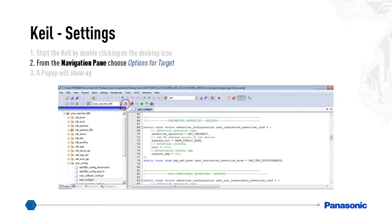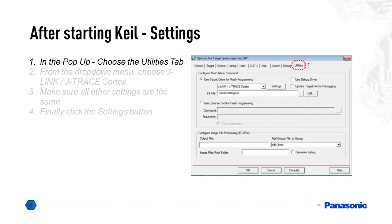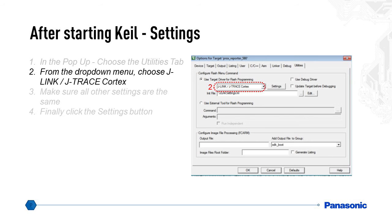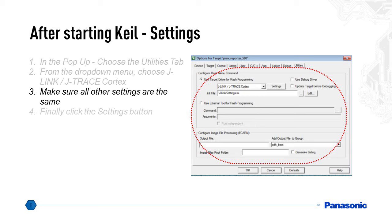From the navigation pane, choose Options for Target. A popup will appear. In that popup, choose the Utilities tab, which is the rightmost tab. From the drop-down menu, choose J-Link/J-Trace Cortex. Make sure all other settings are the same as shown in the slide.